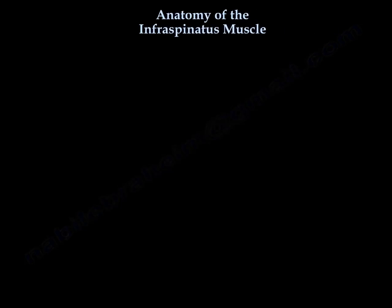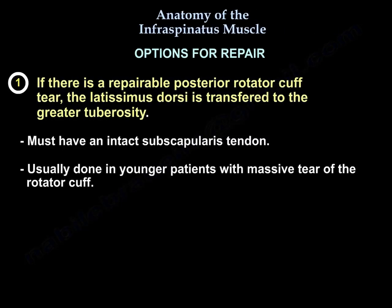For a massive rotator cuff tear with fatty atrophy, the results of rotator cuff repair are very poor. There are several options, but the best two are: first, if there is an irreparable posterior rotator cuff tear, the latissimus dorsi is transferred to the greater tuberosity. This requires an intact subscapularis tendon and is usually done in young patients with a massive irreparable cuff tear.